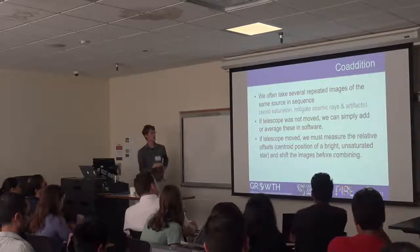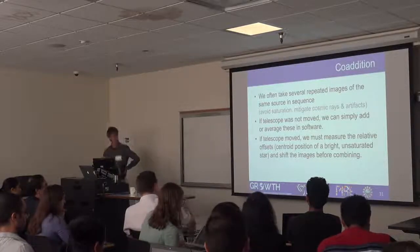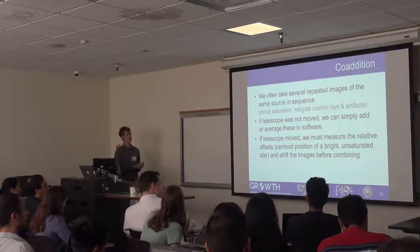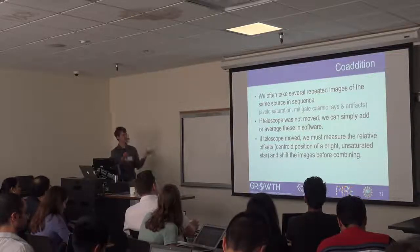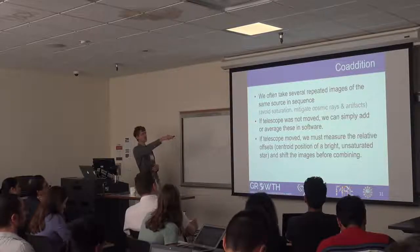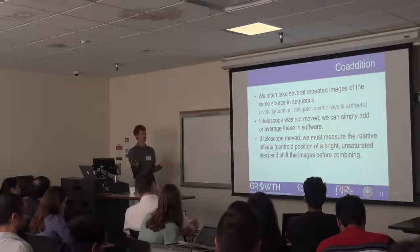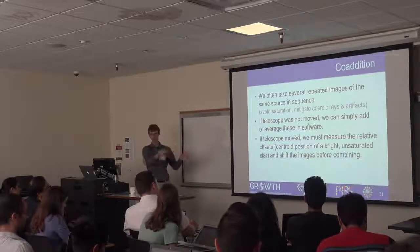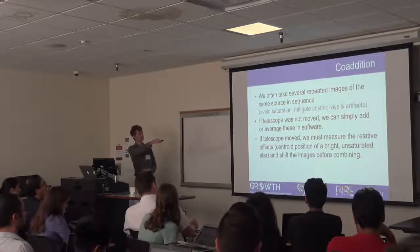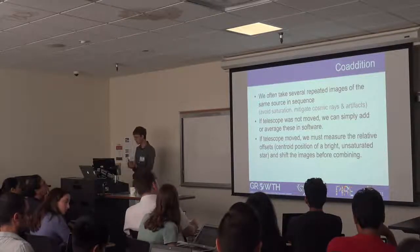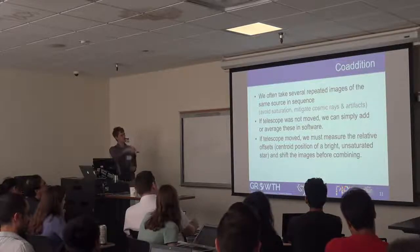Now we're getting close. We've got rid of most of our detector patterns, extra signals. Next is co-addition. Usually if we're observing a source, we take more than one exposure of it. We may take three, five, nine or more depending on exactly what we're trying to do. We do this for a variety of reasons. We have this saturation issue. If you take say a 900 second exposure or an hour exposure, you're going to blow away all your bright stars and then you can't use them for measurements. So instead we split it up into a bunch of individual exposures. This also mitigates against things like detector artifacts, cosmic rays. All those things can be removed if we take lots of images.